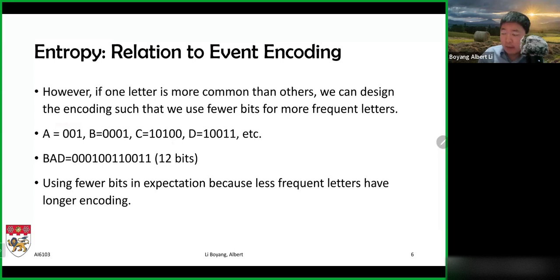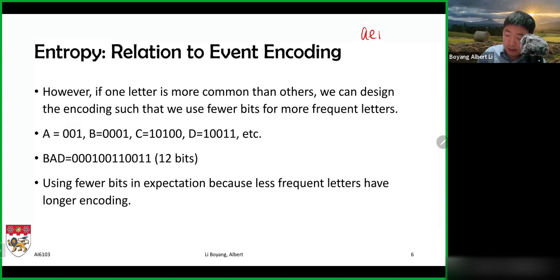If that's the case, then encoding three letters would require 15 bits. However, maybe the frequencies of the letters are not all the same. We know that vowels — A, E, I, O, U — appear a lot more often than some other letters, and there are letters like Z and X that appear very infrequently in the English language.